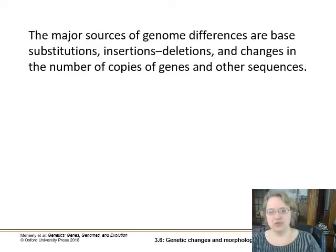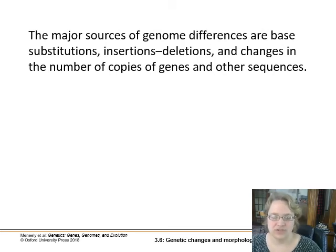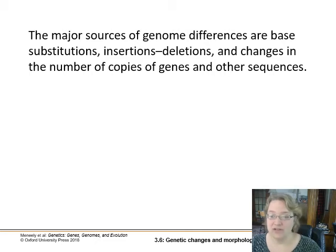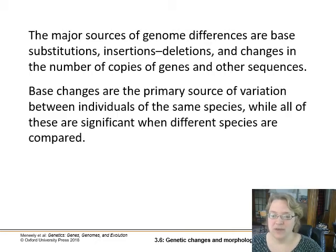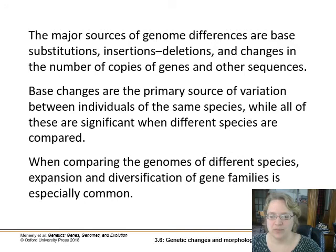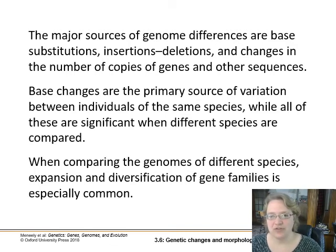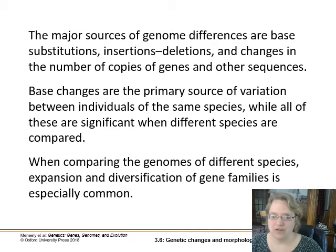The major sources of genome differences are the small ones — base substitutions, insertions, deletions — and then copy number changes. Base changes give us variation between individuals, while they become quite significant when looking at different species. When comparing different species, we want to look at expansion of the genome, how gene copies changed over time, and the diversification of gene families.